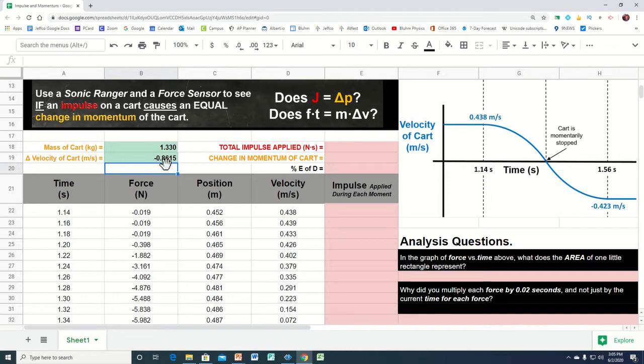Knowing the change in velocity of the cart and the mass of the cart, we can calculate the change in momentum. It is just equal to mass times the change in velocity, which was that number there. And it turned green because we did it correctly.